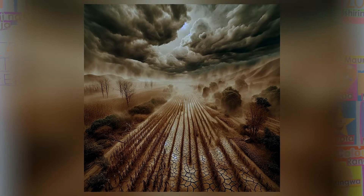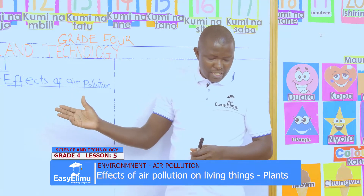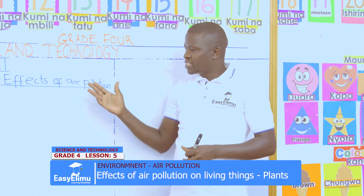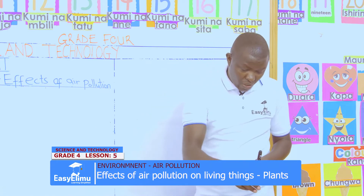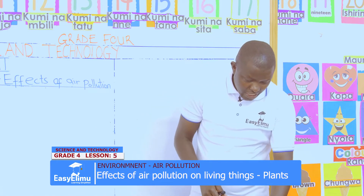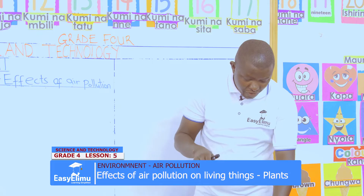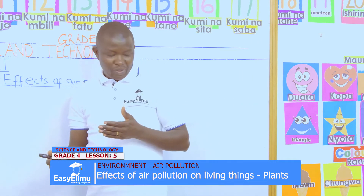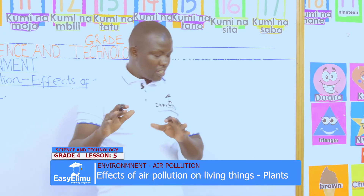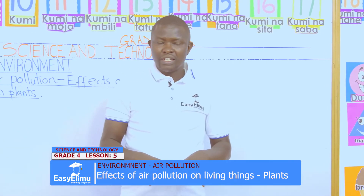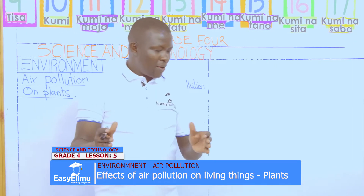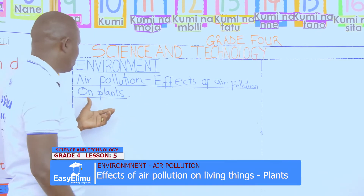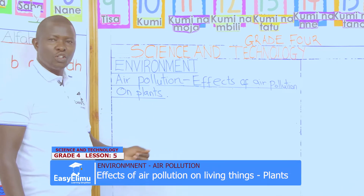Now, we say that air pollution affects plants. The dust is on top of leaves and you cannot identify the color of the leaf because it is full of dust. In our groups, I want us to discuss what are the effects of air pollution on plants.